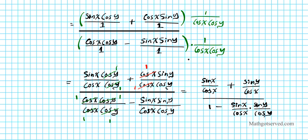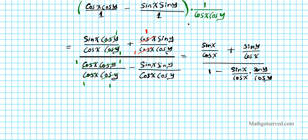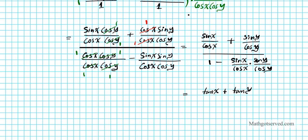We already established that tan θ equals sine θ over cosine θ — the quotient identity. Using that substitution: sine x over cosine x is tan x, and sine y over cosine y is tan y. So the expression becomes tan x plus tan y, divided by 1 minus tan x tan y. And that is exactly the sum identity for tangent — which is what we wanted to derive.